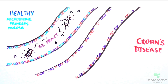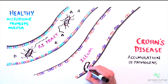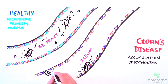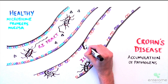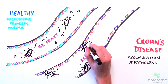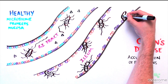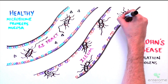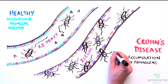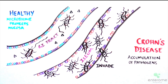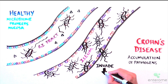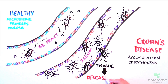Adherent invasive E. coli, AIEC, are bacteria found in the ileum of Crohn's disease patients. They take advantage of the altered microbiome to form a biofilm and invade the intestinal mucosa. AIEC cannot adhere to the protected mucosa in healthy patients, unlike in Crohn's disease where the level of AIEC infection is associated with the severity of the disease.